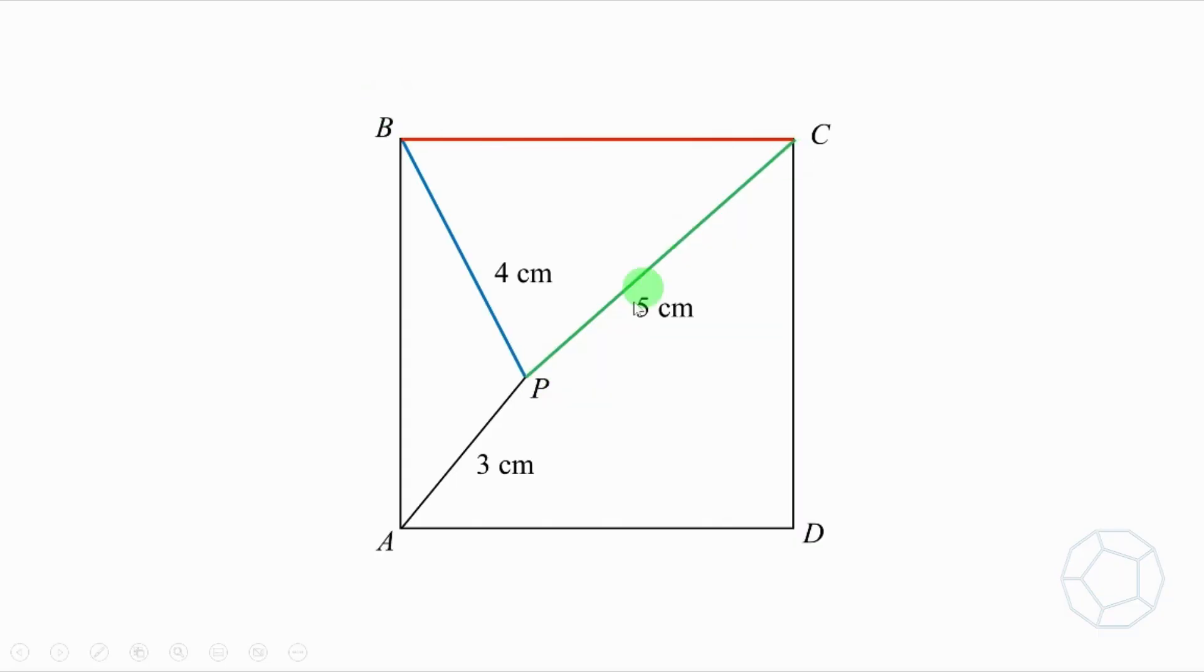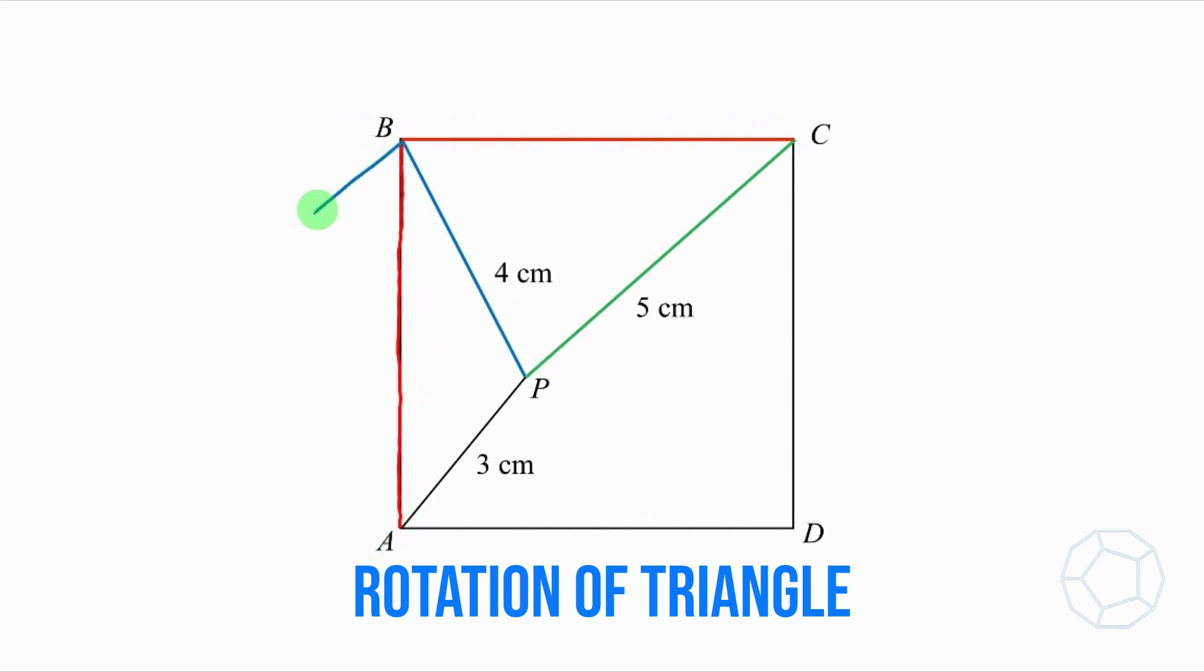In the figure, the three sides of triangle BPC are colored in red, blue, and green. Let's rotate the sides of triangle above the point B by 90 degrees in clockwise direction. Then, the red side BC is rotated to BA. The blue side BP is rotated to a new position. We call the image of P as E.